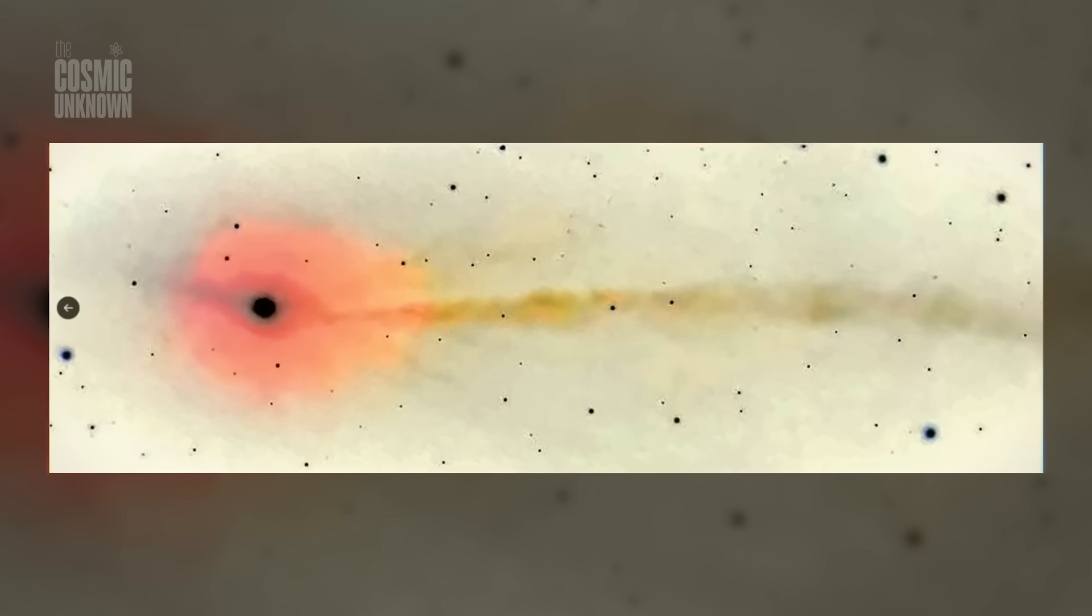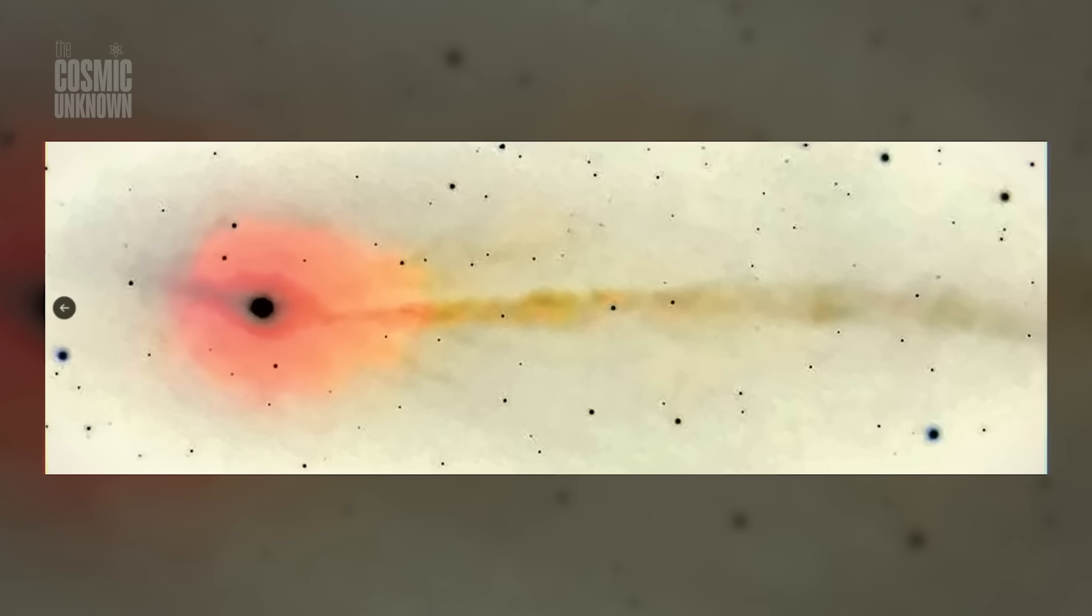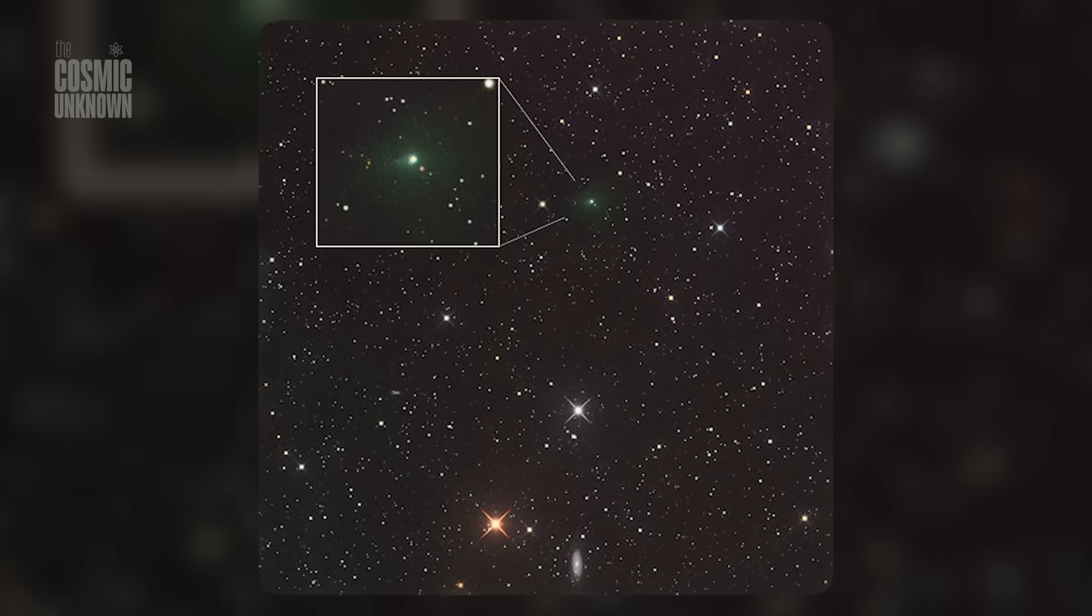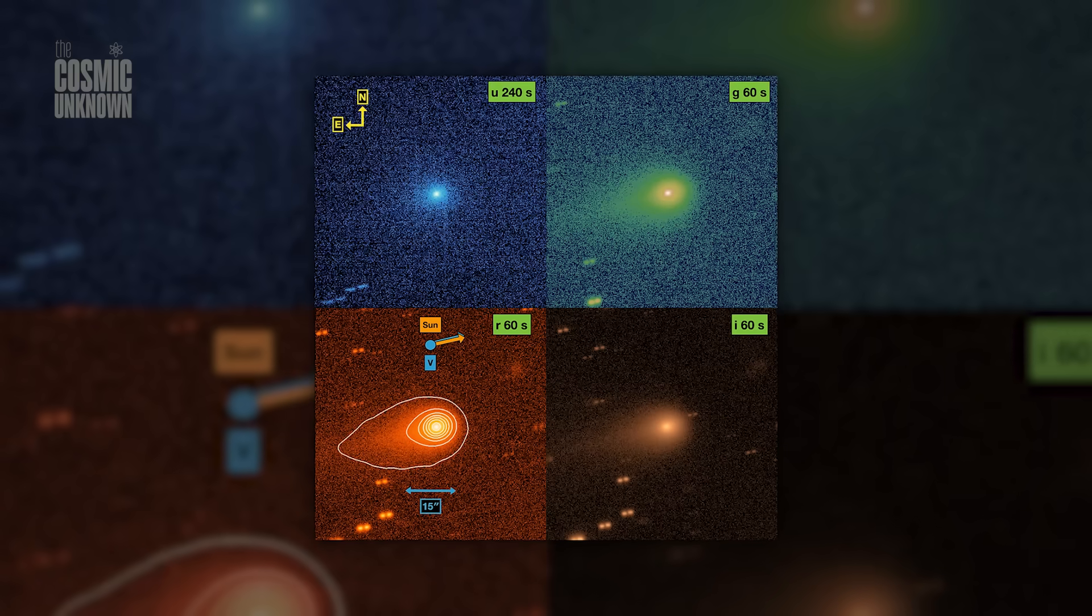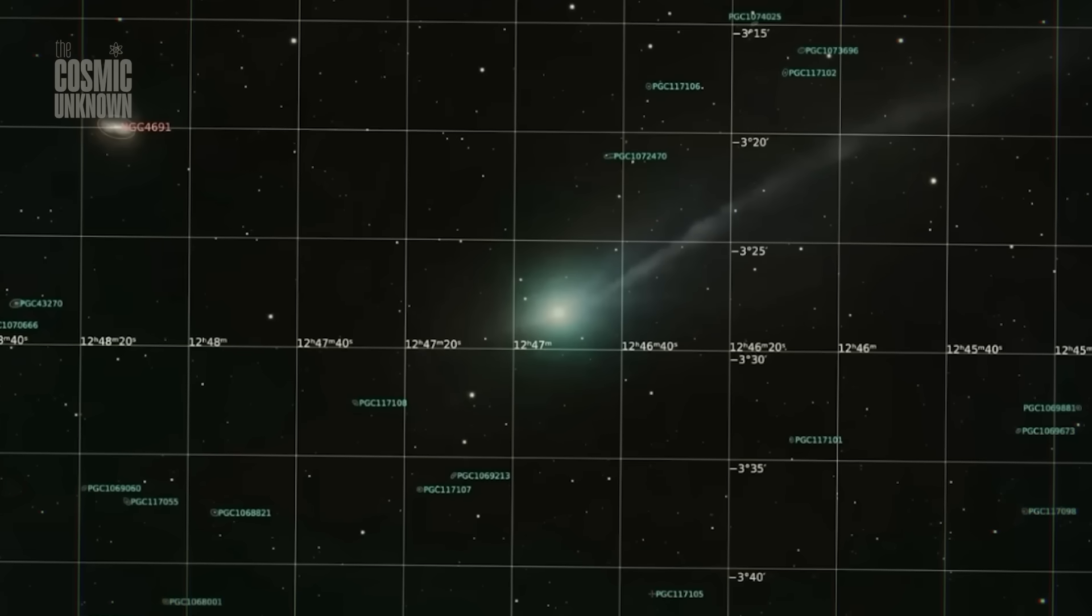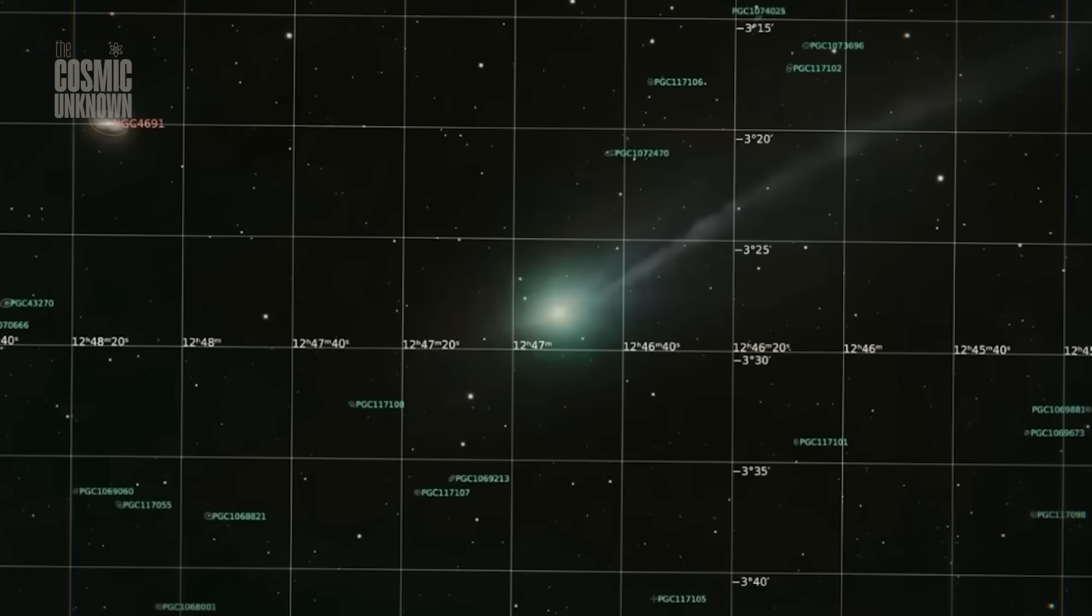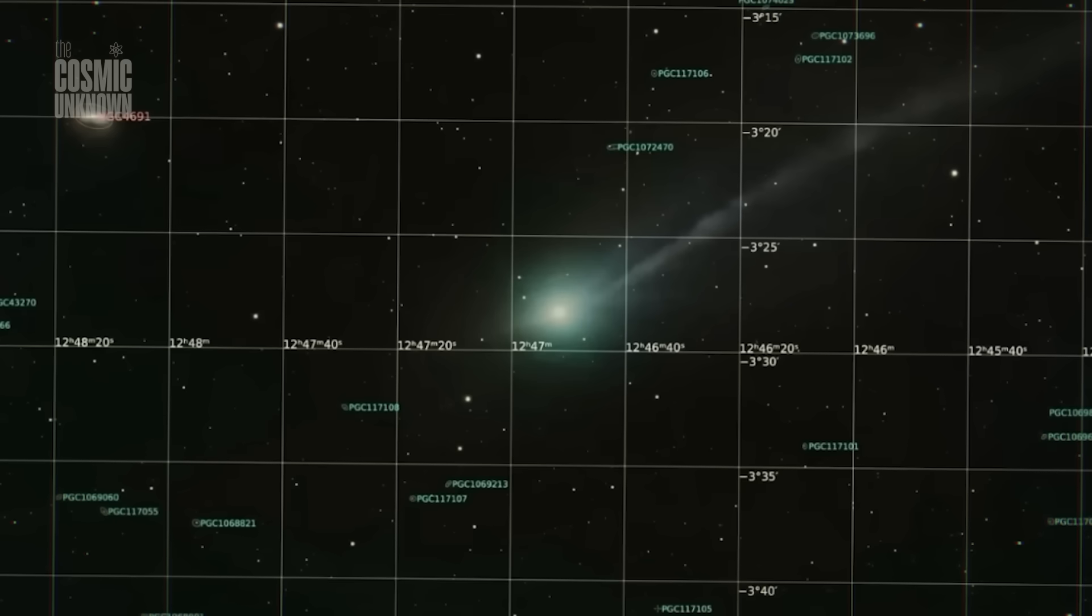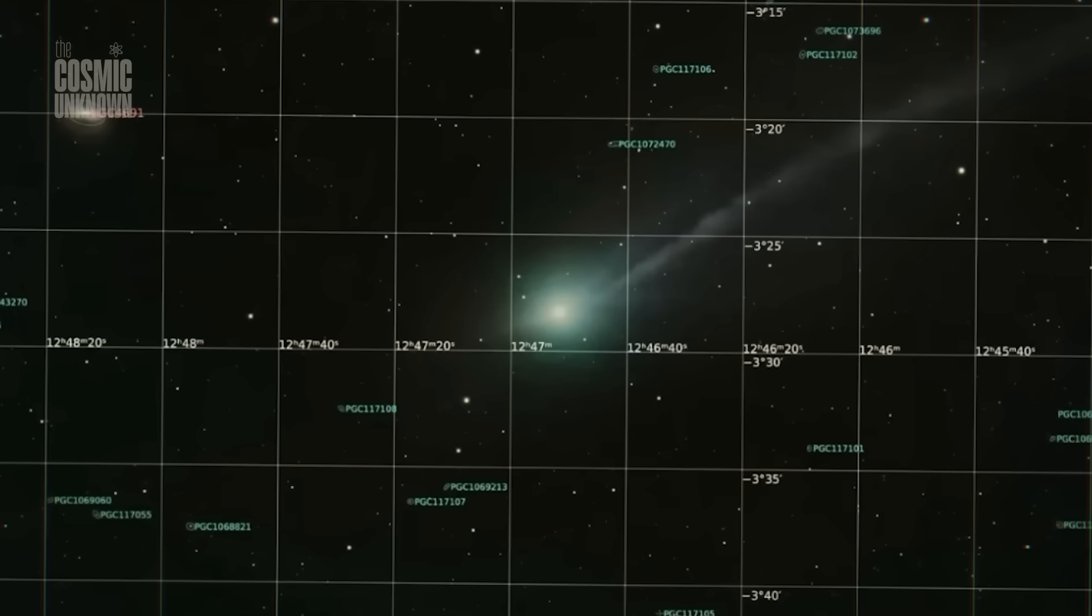But when you put the steady photo next to these small oddities reported by people watching night after night, you get this mix of calm and motion that makes the object feel more alive than a single image can show. And maybe that's the part that keeps drawing people back—the picture gives a clean snapshot, but the night-to-night behavior adds a kind of movement behind the scenes. It's not loud, it's not wild, it's just enough to make 3i Atlas feel like something that doesn't stay the same every time you look at it.